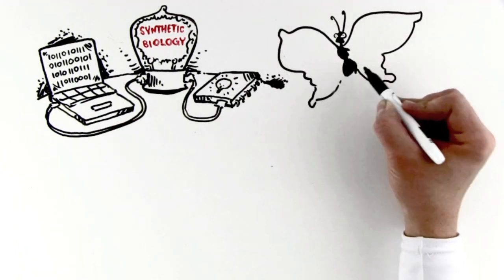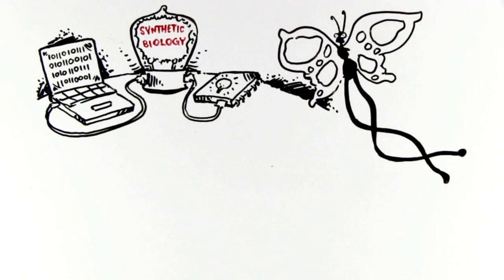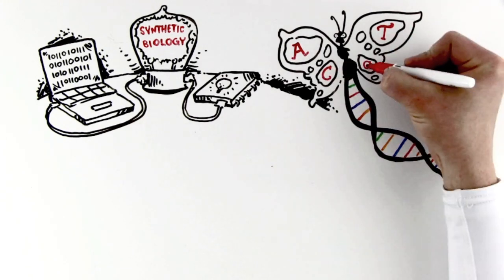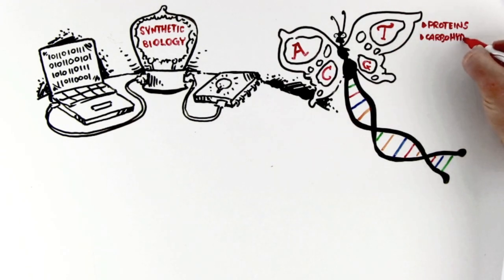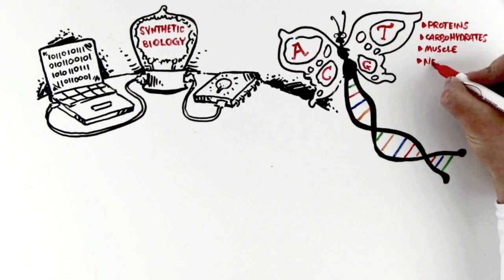Every living organism contains the instruction code of DNA, written in four letters, A, T, C, and G, that directs everything, what proteins and carbohydrates the cell produce, and where the cell is muscle, nerve, or skin.